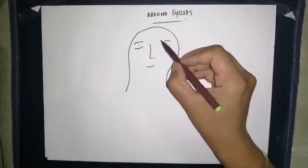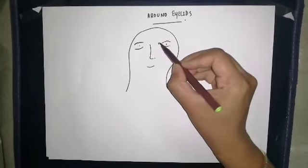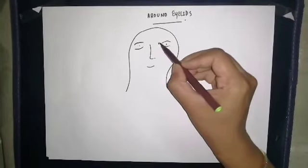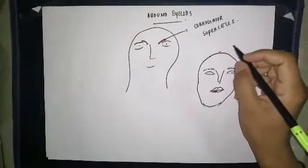Now we discuss a small muscle around the eyelids: the corrugator supercilii. This muscle originates from the medial end of the superciliary arch and gets inserted into the skin of the mid-eyebrow, on both sides.